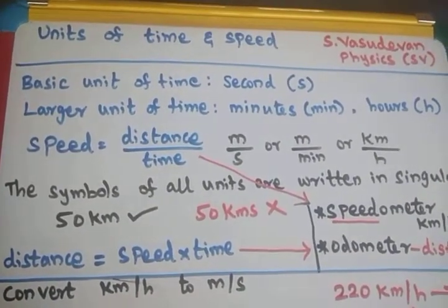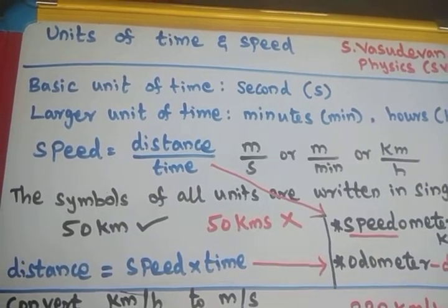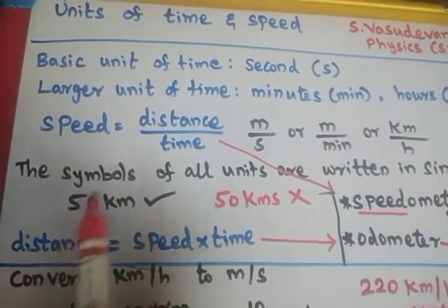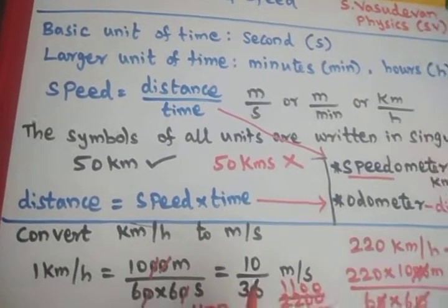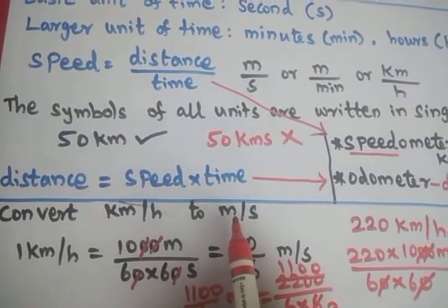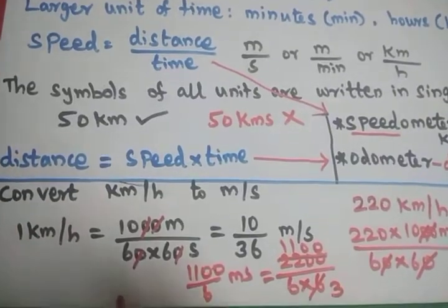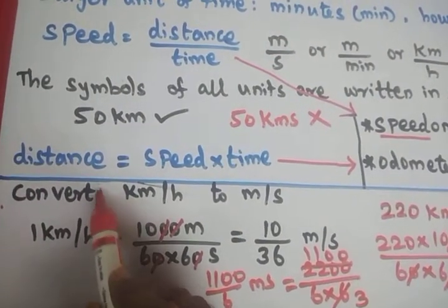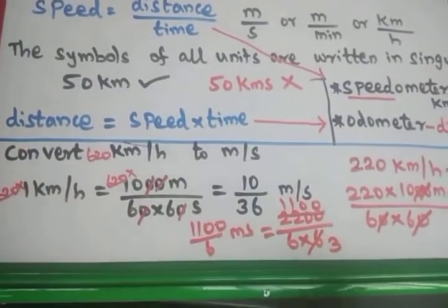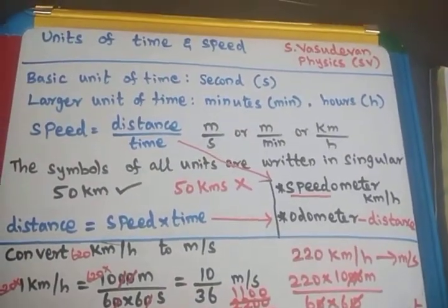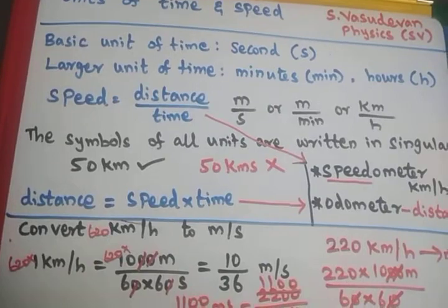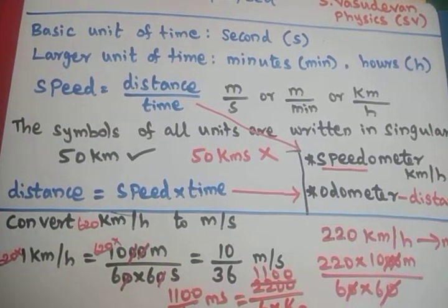In this session we have studied the units of time — second, minutes, and hours — and the units of speed — meter per second, meter per minute, or kilometer per hour. Symbols are always represented in singular. The conversion is: 1 kilometer equals 1000 meters, and 1 hour equals 60 into 60 seconds. Practice the calculations on your own. For this week's homework, read book pages 147, 148, 149, and 150.